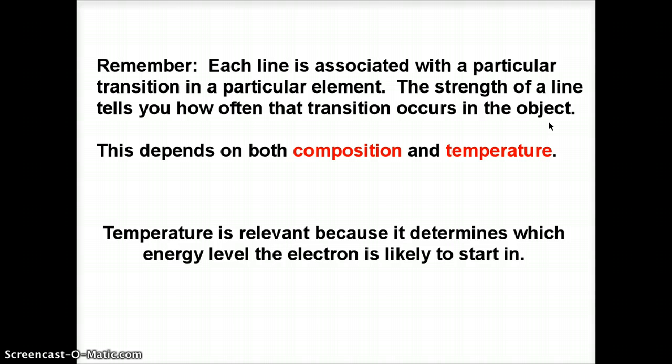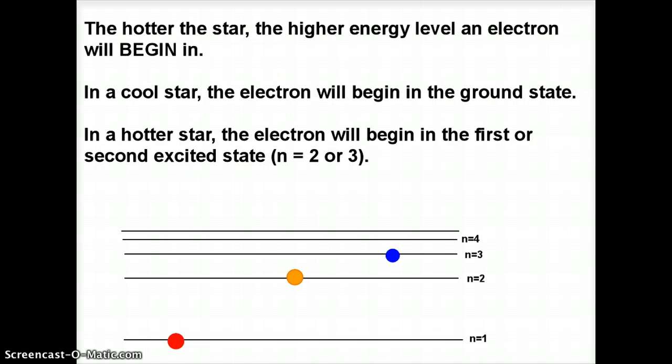And the reason temperature is relevant is because it determines which energy level the electron's going to start in. If I don't have the electron in the right starting level, then I'm not going to get a particular transition. If I want to get H-alpha, I have to be in the N equals 2 state to begin with, so that it can jump from 2 to 3. And temperature does determine that. Temperature tells you where the electron is going to begin with. If an atom is hotter, then it's going to have more energy, and that means that the electron is going to be in a higher level.